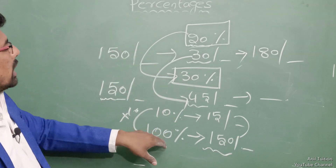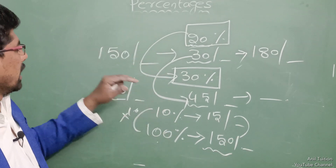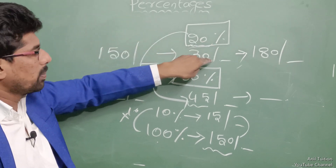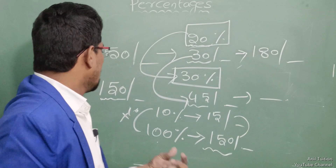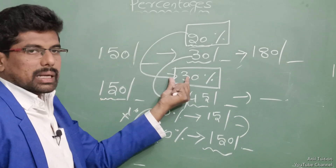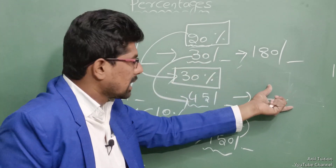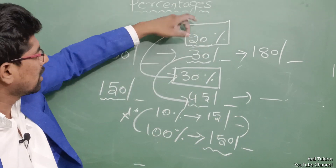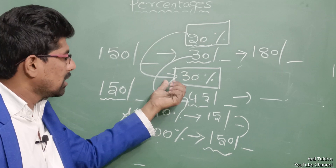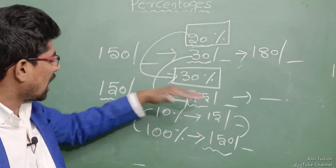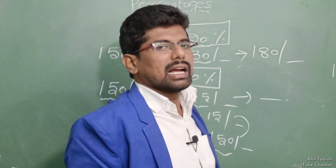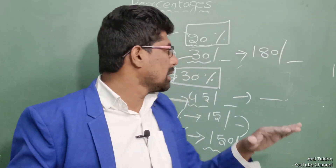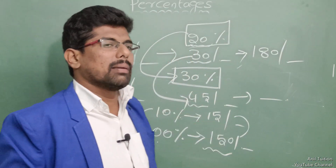So if you have any problem: income 150, 20% is 30 rupees, so total salary is 180. Then 30% of salary is 45, so total salary further increases. First 20% increase, then again 30% increase — let's look at the difference. This is the easy method you can solve in an exam, using pen or mental math for fast calculation.